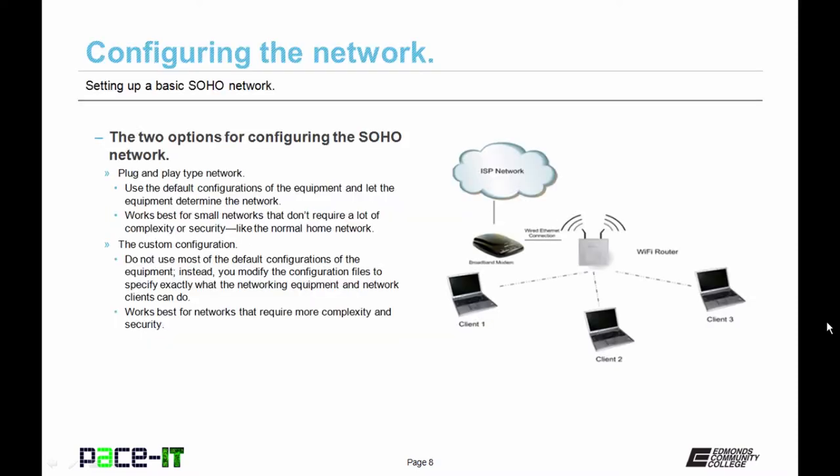You have two basic options for configuring the SOHO. First, you have the plug and play type network. This uses the default configurations of the equipment and you let the equipment determine the network. This works best for small networks that don't require a lot of complexity or security — like most home networks. Your grandma doesn't need a whole lot of complexity in order to surf the web for kitten videos.